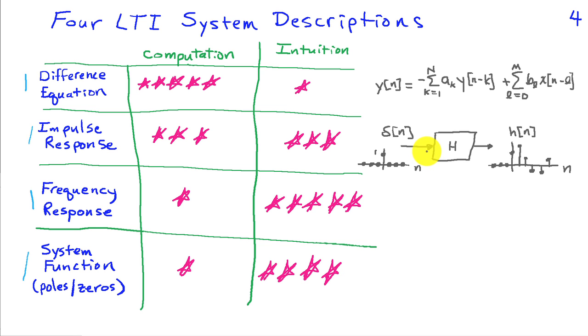The impulse response says, how does the system respond when we apply an impulse as an input? If delta of n is the input, we get a response h of n, and this response h of n can be used to determine the output of the system for an arbitrary input because the system is linear in time and variant.